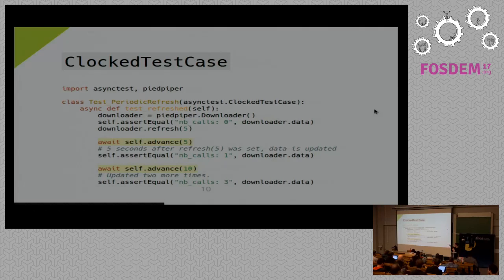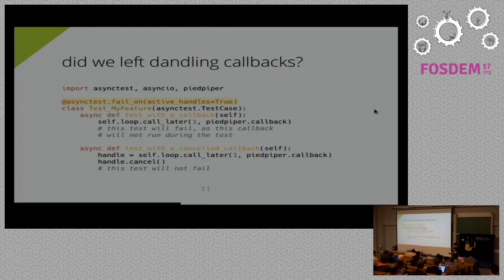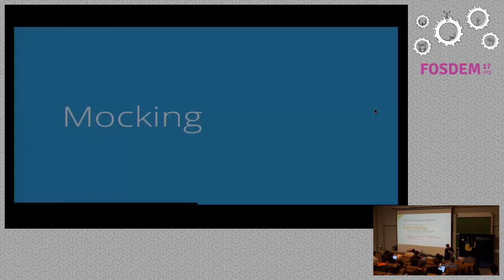If we just moved the time forward to ten seconds in one jump, we would only have one call and the callback set for five seconds would be missed. You may also want to ensure that a callback scheduled for later has been executed before the end of your test. You can check that with the optional active_handles test, which you can enable with the fail_on decorator. I also handle the case where you cancel the handle and the callback.